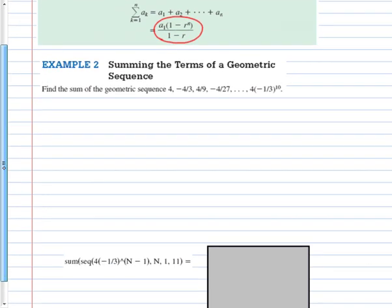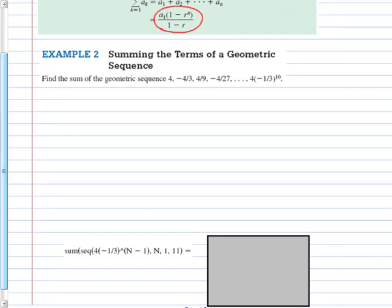Let's try it out. Find the sum of the geometric sequence that has 4, negative 4 thirds, etc. We need to know what the first term is. The first term is 4. I need to know what the common ratio is.